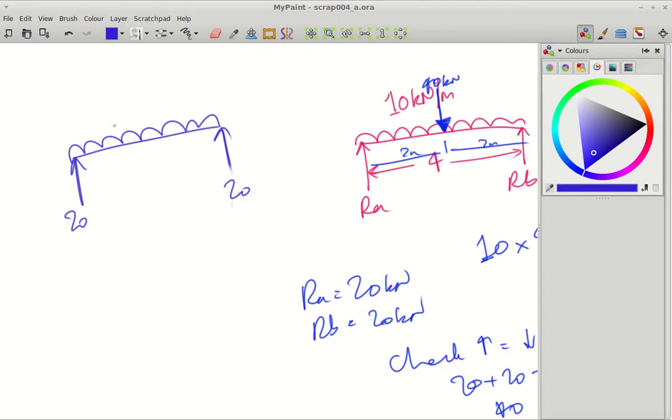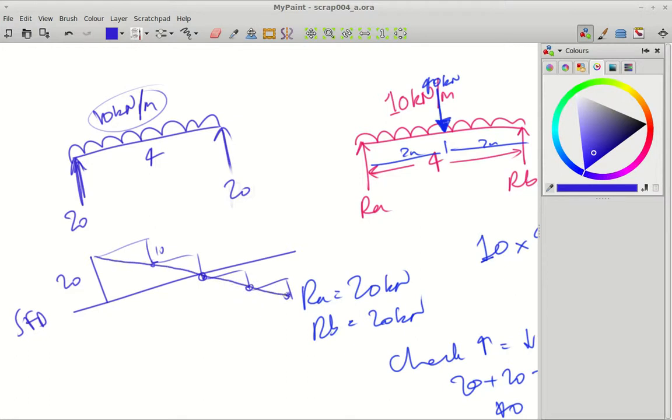So I've got 10 kilonewtons per meter run and we know it's acting over four meters. To draw a shear force diagram for a UDL, we've got an arrow coming up of 20, and then for every meter we go across we're dropping down 10 kilonewtons because it's 10 kilonewtons per meter. So going across and down, across and down, across and down, and you end up with a diagonal line by joining these dots.